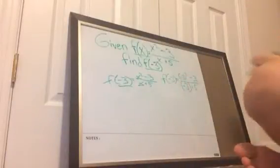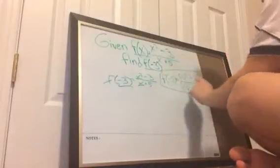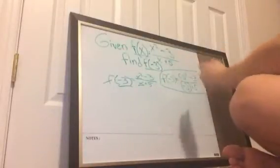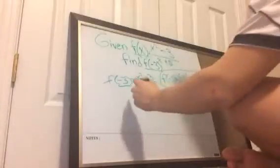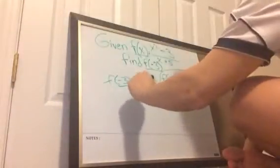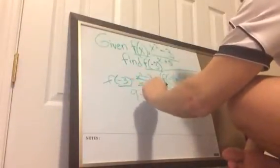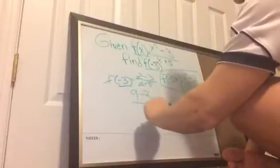So now all you do is solve this equation, or simplify this equation. So what you have is 9 minus 3 over 2.